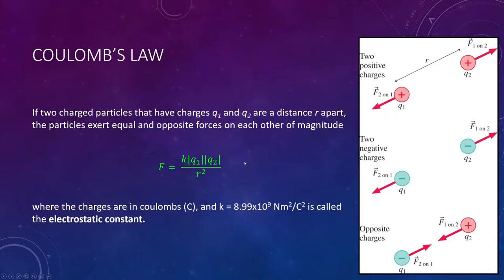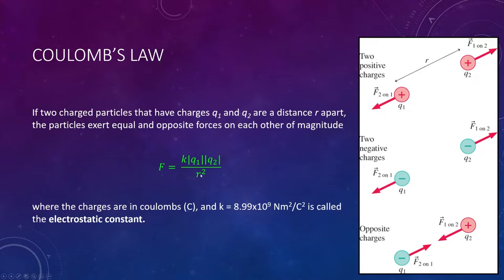You'll see in an example soon where the negatives come into play. This equation should make sense: the q's are up top because the more charge you have, the stronger the push or pull is going to be — more charge means more force. The distance being down below also should make sense: the closer the two charges are, the stronger the force, but the further away, the weaker. That's an inverse relationship: if you increase r, you're dividing by more, which weakens the force.